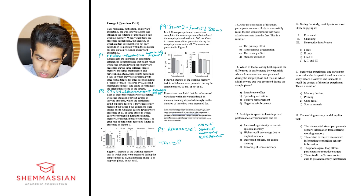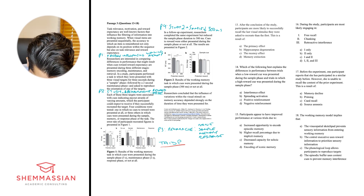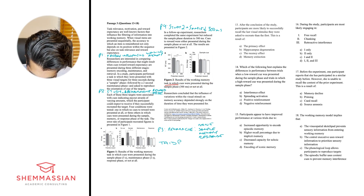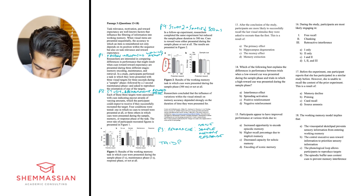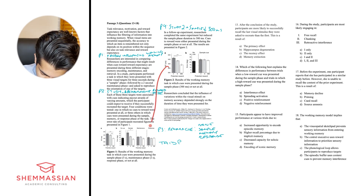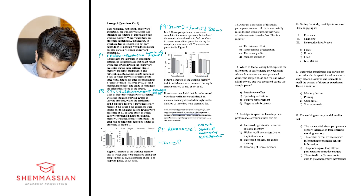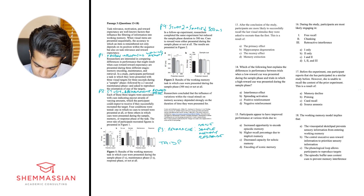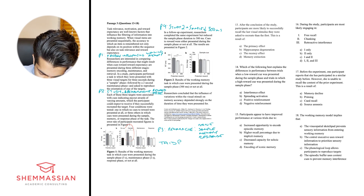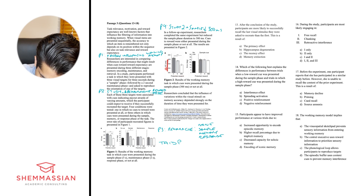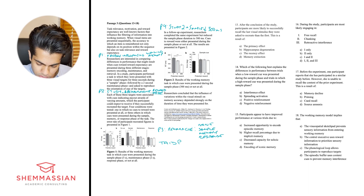Let's apply the TAIDP method to Figure 2. The title is: 'Results of the working memory task in which cues were presented during the sample phase or not at all.' Axes: potential reward, and degree of error, plus what looks like performance measured by retrieval time. Very similar to Figure 1 for independent and dependent variables. For pattern — I don't really see a strong pattern here. That 300-millisecond reduction seems to have caused less disparity compared to Figure 1b. In Figure 2a, with higher reward, retrieval time does seem slightly improved.